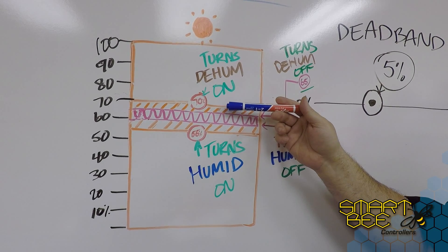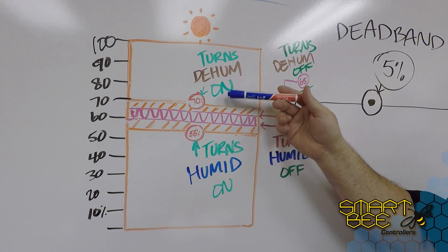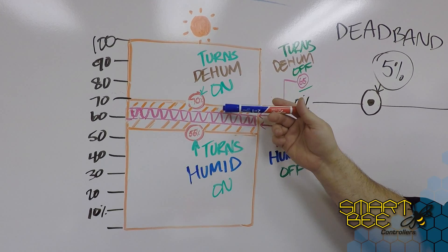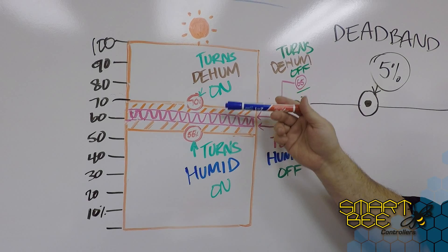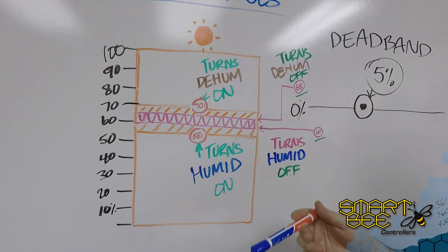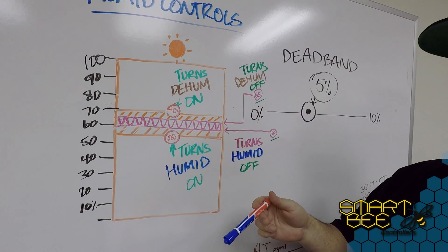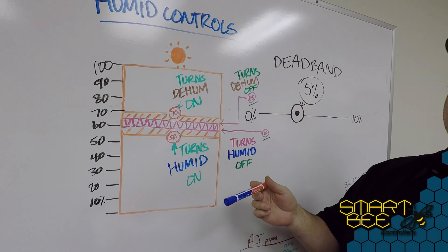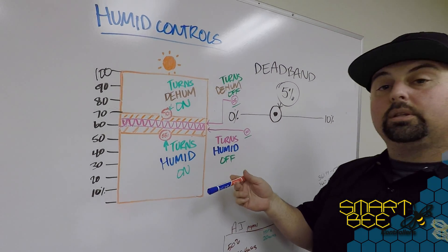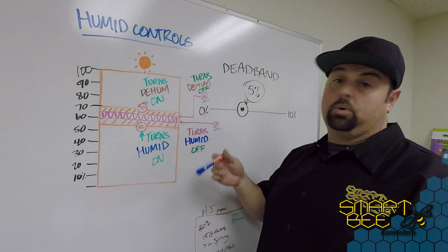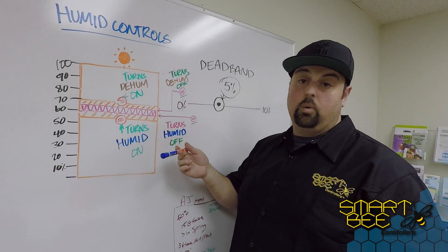off at 70 or 69, which is on-off-on-off-on-off, which especially in the case of appliances that have compressors in them will shorten the life of your equipment.